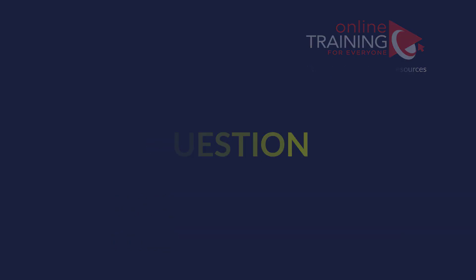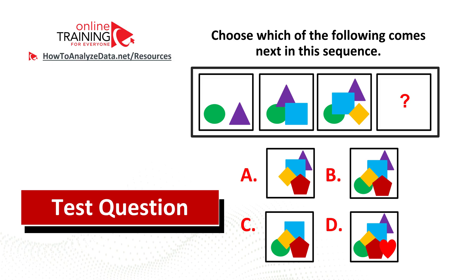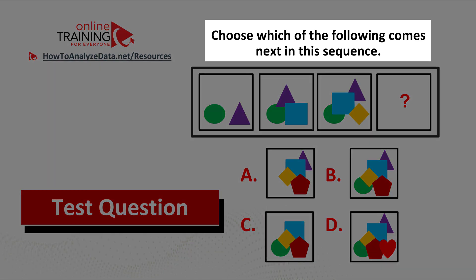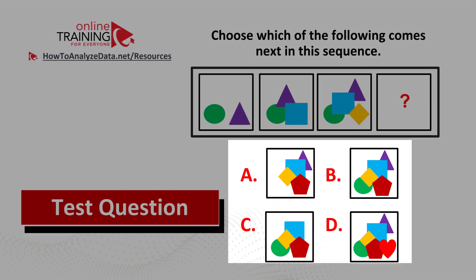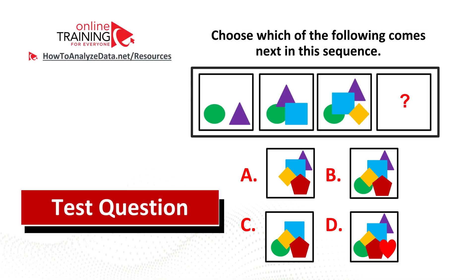Here's an interesting question from the real test. I have confidence that you might figure out the answer. Choose which of the following comes next in the sequence. You're presented with a sequence of objects — take a close look and try to determine which one of the choices A, B, C, or D comes next. Now might be a good time to pause this video to see if you can come up with the solution on your own.